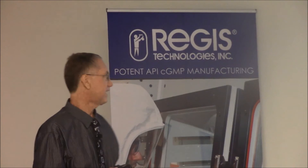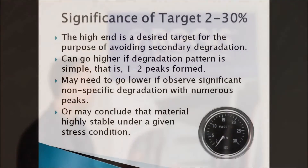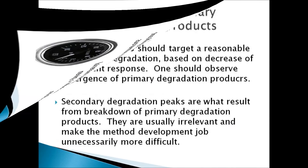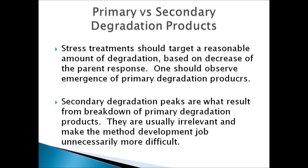The significance of having a target of two to thirty percent — it's not a written-in-stone range, by the way — it's just a good approximation of how much you want to degrade your material when you subsequently decide to use that sample for method development. You can go higher if the degradation pattern is simple, meaning just one or two peaks are formed, or you might need to go lower if you're finding a lot of little peaks due to nonspecific degradation. You might also conclude that a material is so stable under a given stress condition that you can't attain that target, despite trying as hard as you could.